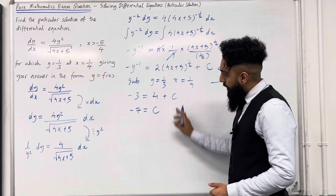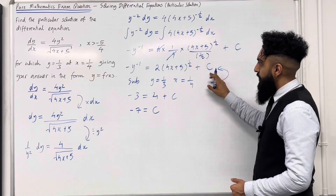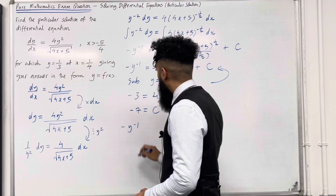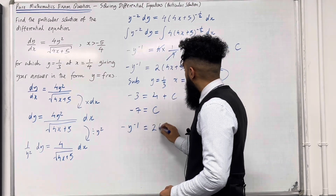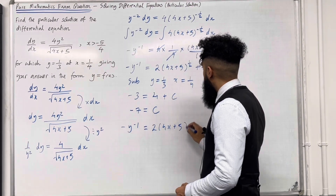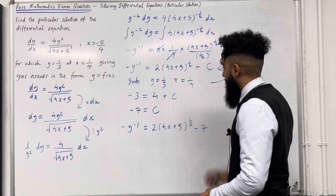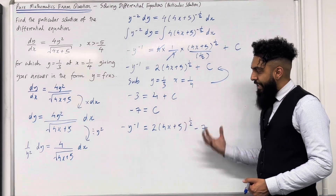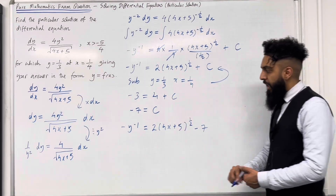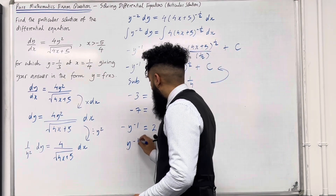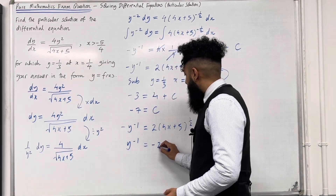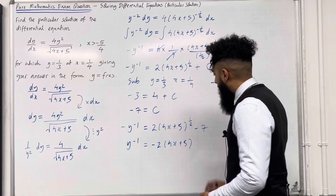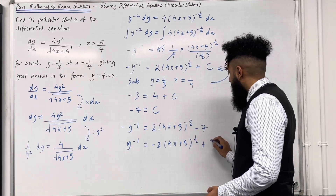Once I've got my constant of integration, I need to put it back into the equation. So I've got minus y to the power minus 1 equal 2 lots of (4x plus 5) to the power 1 half minus 7. Dividing both sides by negative 1 gives me y to the power minus 1 equal minus 2 lots of (4x plus 5) to the power 1 half plus 7.